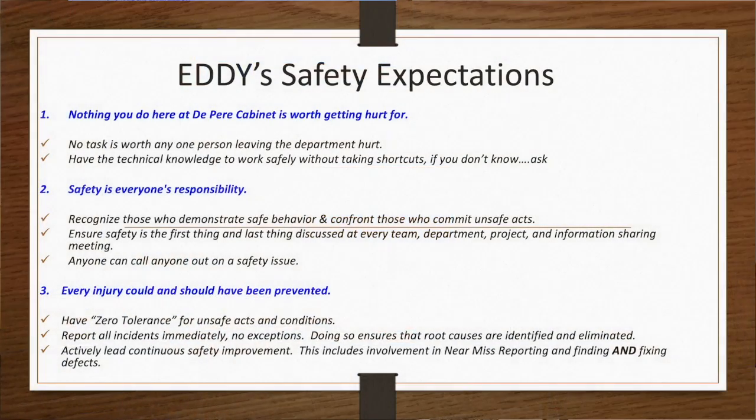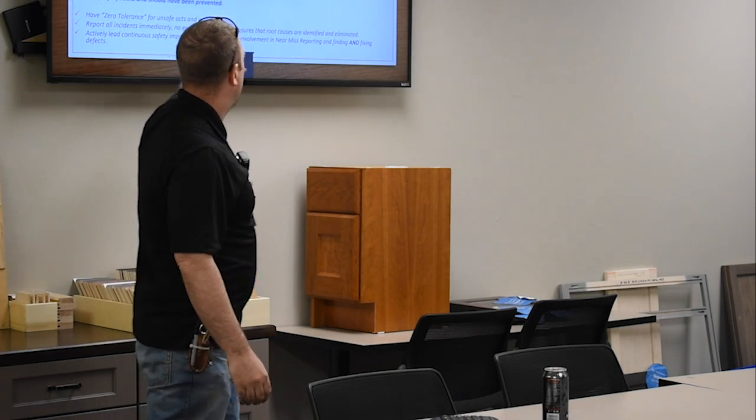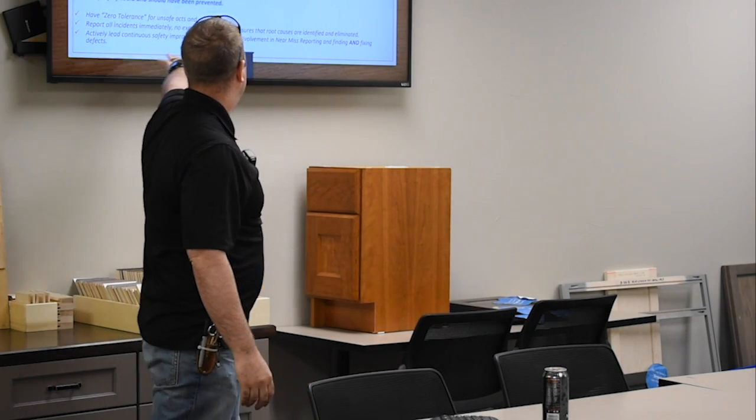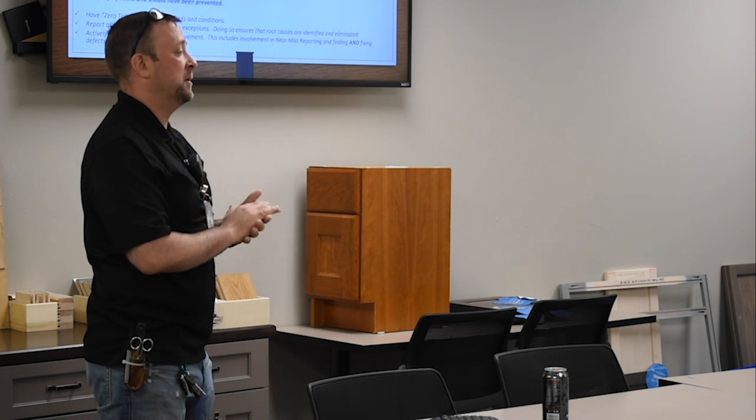Every injury could have and should have been prevented. About 98% true. There's accidents, accidents happen through no fault. But I'm going to tell you that although this says we have zero tolerance for unsafe acts and conditions, report everything immediately, and actively, we're going to lead to continuous improvement here. Most of these could have been prevented. I can give you a hundred examples. I can give you a couple.